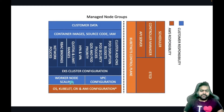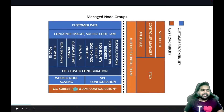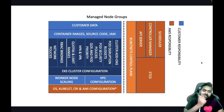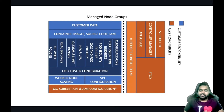In this particular case, along with the control plane, the OS, kubelet, CRI, and AMI configuration are also AWS's responsibility, whereas node scaling, VPC, and all other workloads are user responsibility. Worker node scaling here means cluster autoscaler, Karpenter, or a similar solution.